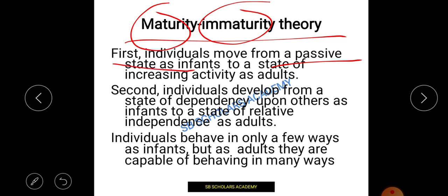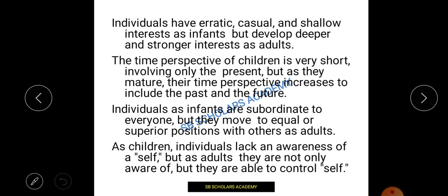As an infant, there is a state of dependency — immature. As the person becomes adult, they become independent. Behavior also changes: as an infant they behaved one way, but as an adult they behave differently — they become mature and understand what is and is not accepted in society. Doing unacceptable work leads to failure; doing acceptable work gives recognition and acceptance.